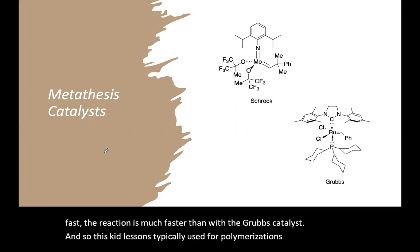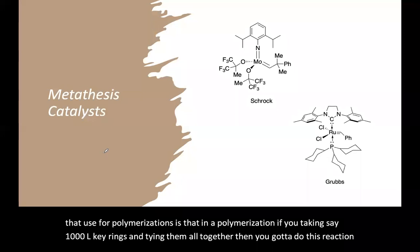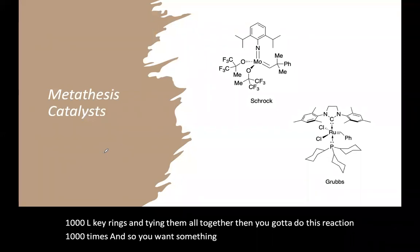And so this catalyst is typically used for polymerizations. And the reason it's used for polymerizations is that in a polymerization, if you're taking, say, a thousand alkene rings and tying them all together, then you've got to do this reaction a thousand times. And so you want something that's really fast, if that's going to happen in any reasonable amount of time.